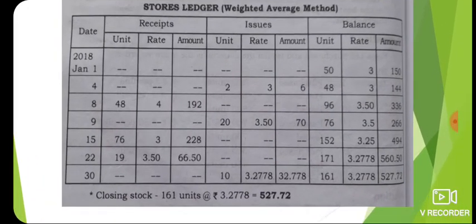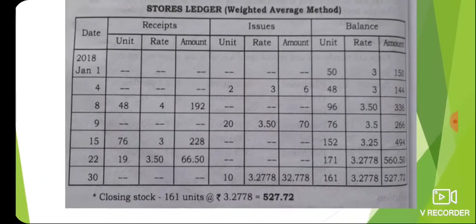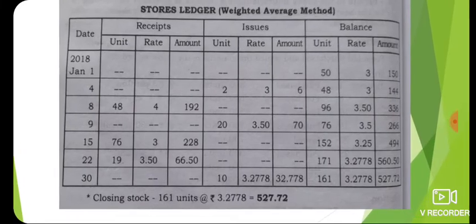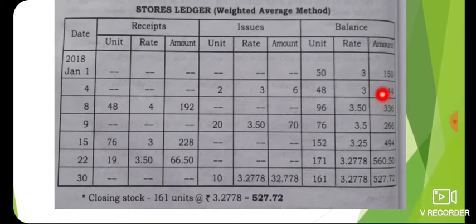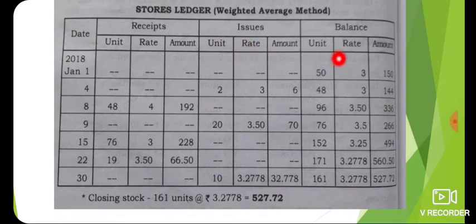Stores Ledger — Weighted Average Method. Columns: Receipt, Issue, Balance. Under each section: Unit, Rate, Amount, Balance.